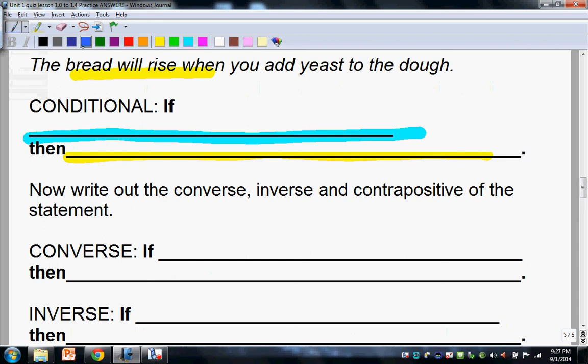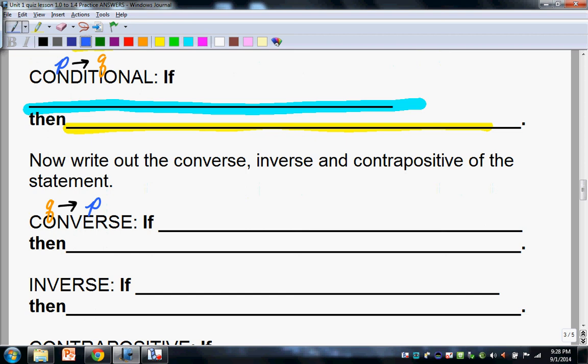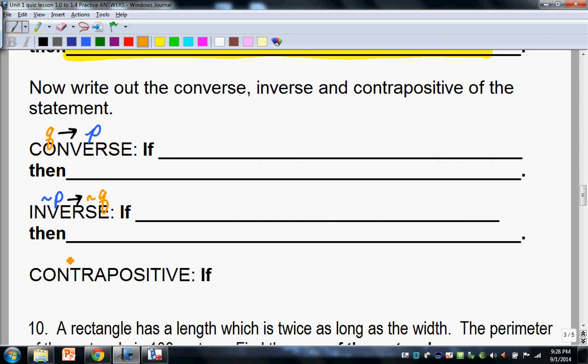So, this would be the conditional, if p, then q. Converse, you switch, that's going to be if q, then p. Inverse, you say the opposite of the original, so that's going to be if opposite p, then opposite q. And contrapositive, you switch and negate. So, this one is opposite q, then opposite p. Converse is switch, inverse is negate, contrapositive you switch and negate.